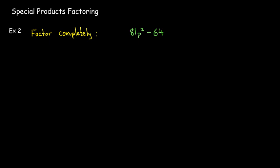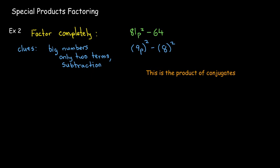Now here, it's easier to see if you have a polynomial which might be the product of conjugates. For 81p² - 64, you have big numbers, though you don't always have big numbers. But there's only two terms, that's a big clue. You've got subtraction, and each term is a perfect square. So if you have the difference of two squares, then it is the product of conjugates. So let's factor that out: it'll be (9p + 8)(9p - 8). Of course, order of multiplication doesn't matter, so I could have also written this as (9p - 8) coming first, and then (9p + 8).